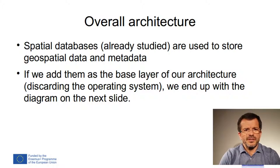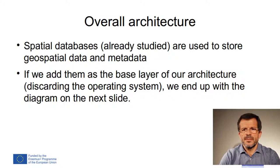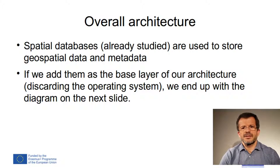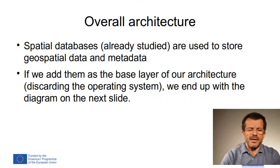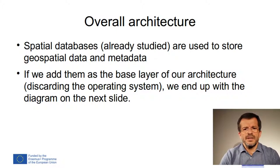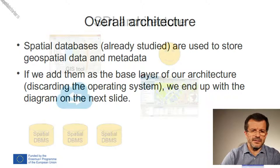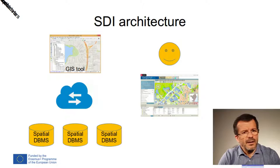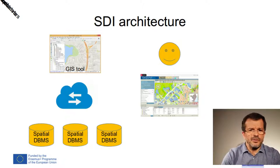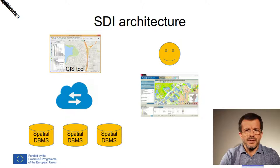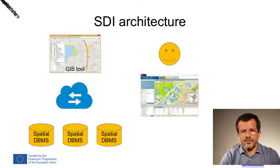The diagram shows the relation between the IT components. Users are able to use GIS tools and the geoportal. The GIS tool and the geoportal are able to take advantage of the services provided by the servers. To have the overall architecture, we need to add spatial databases already studied. Spatial databases are used to store geospatial data and metadata. If we add them as the base layer of our IT architecture, discarding the operating system, we'll end up with a diagram on the next slide showing all components and their relations. Users might not have direct access to the database, but using services will be allowed to take advantage of all geospatial datasets.